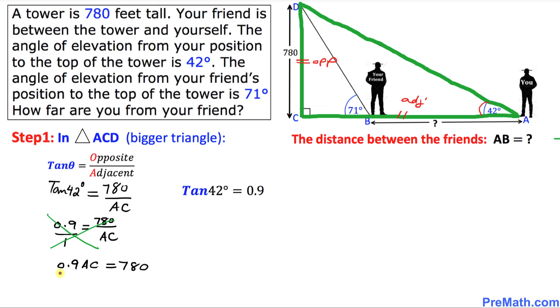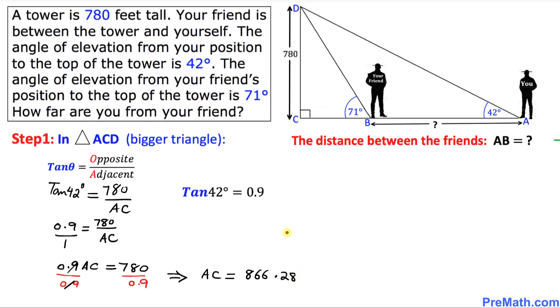Since we want to solve for AC, I'm going to divide 0.9 on both sides. So this 0.9 simply cancels out. So that means our AC, the length of the AC, is going to be simply 866.28. So thus I'm going to write down the value of AC that we figured out is simply 866.28 feet. Just keep in your mind.